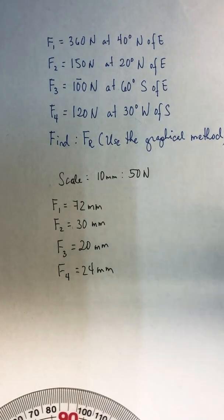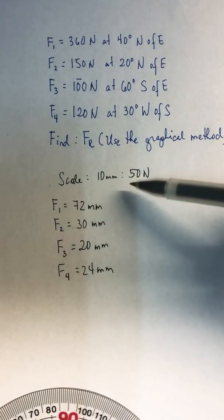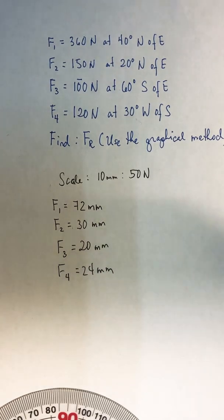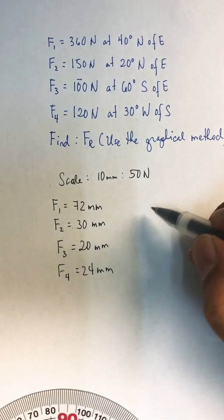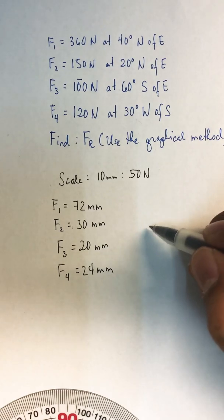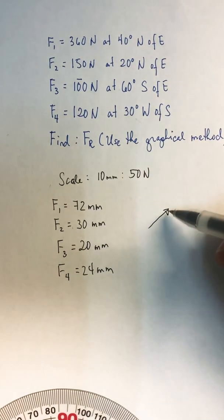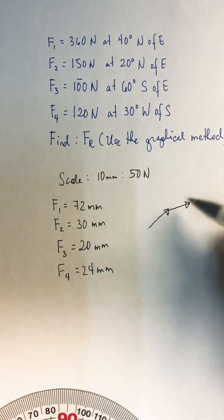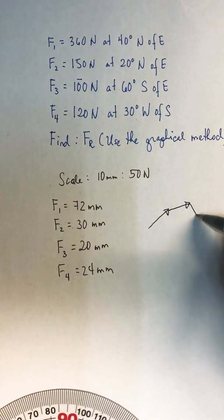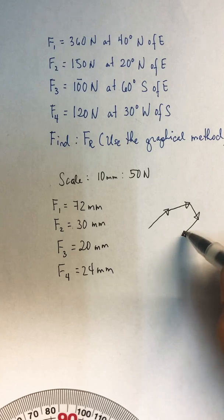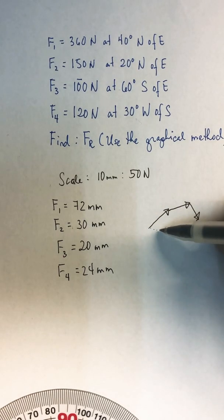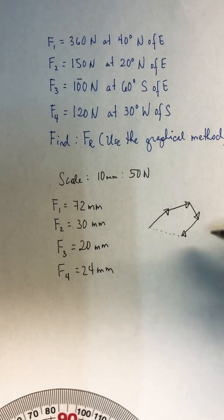After choosing an appropriate scale and making the necessary computations, the next step is to estimate the start and finish of the vectors. For the first vector, it heads northeast. The second vector also heads northeast. The third vector is south of east, and the fourth vector is west of south. So most likely the resultant force will be in this direction.